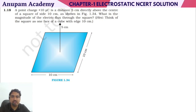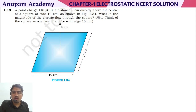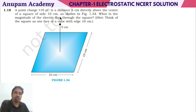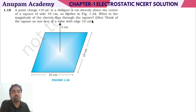Next question, number 1.18. This is a very interesting question and we have to use a very important logic here. In the question given, a point charge of 10 microcoulombs is at a distance of 5 cm directly above the center of a square of side 10 cm, as shown in the figure. What is the magnitude of flux passing through the square?